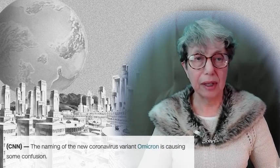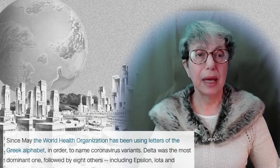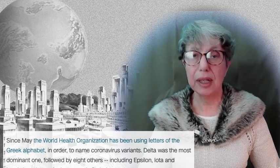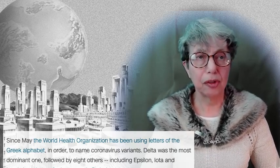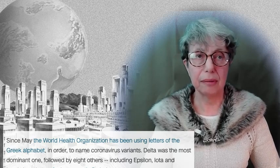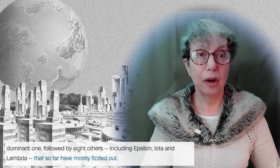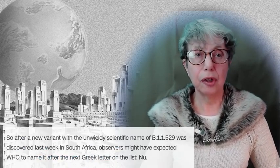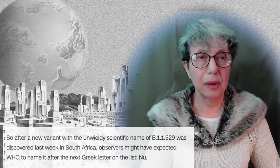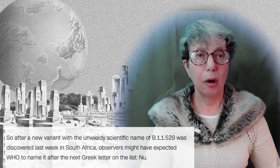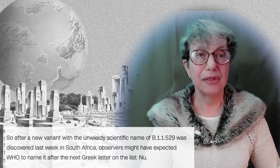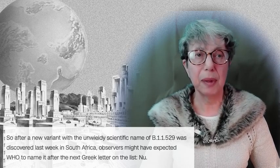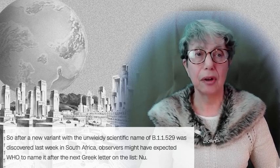CNN has an interesting take on this. The naming of the new coronavirus variant Omicron is causing some confusion. Since May, the World Health Organization has been using letters of the Greek alphabet in order to name the coronavirus variants. Delta was the most dominant one, followed by eight others including Epsilon, Iota, and Lambda that so far have mostly fizzled out. So after a new variant with the unwieldy scientific name of B.1.1.529 was discovered last week in South Africa, observers might have expected WHO to name it after the next Greek letter on the list: Nu.